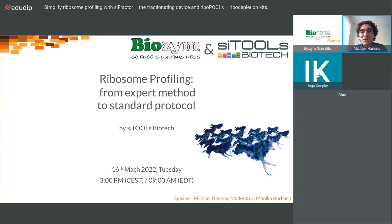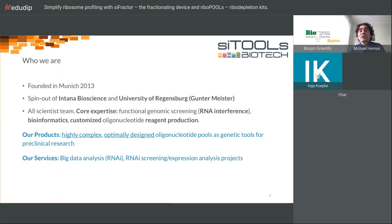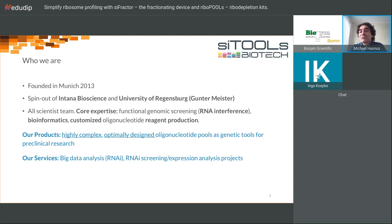Welcome everybody. It's my pleasure to talk about ribosome profiling and our efforts to bring a very complicated method to one that can be applied in every lab. As a quick introduction: we are Cytoids Biotech, I'm the founder and CEO, we are based in Munich and we are a spin-out of Internal Bioscience and the University of Regensburg. Our core expertise was initially RNA interference, which led us into RNA-seq and then into ribosome profiling.